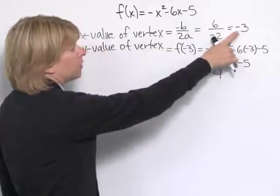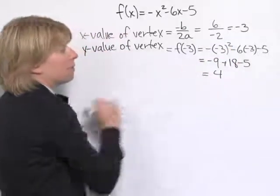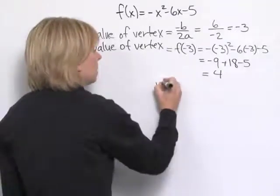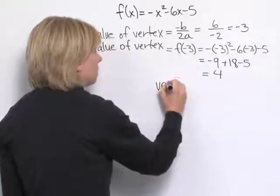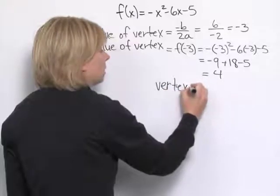So we have our x-value of the vertex, our y-value of the vertex. So (-3, 4) is our vertex.